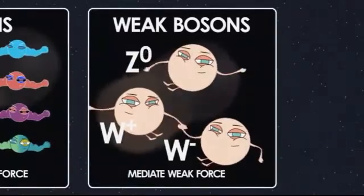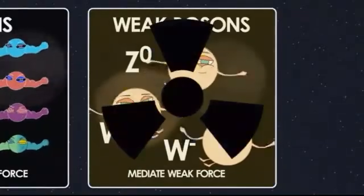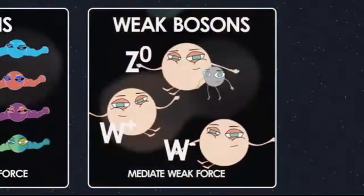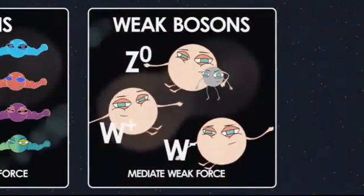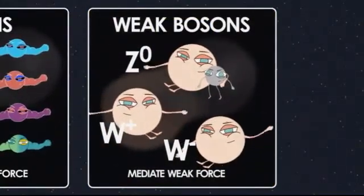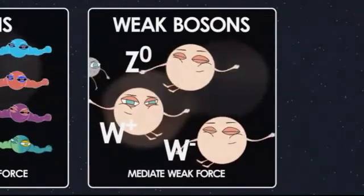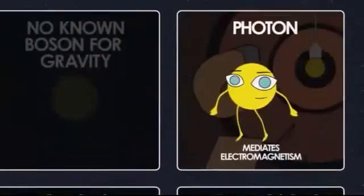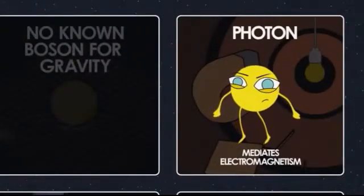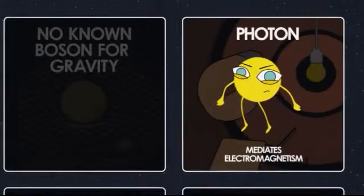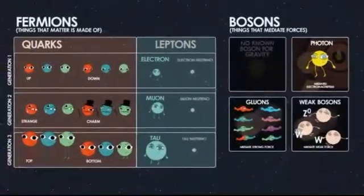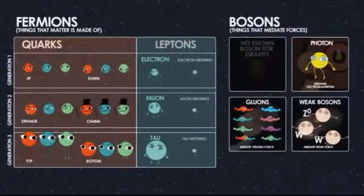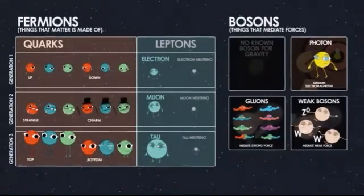The weak nuclear force is basically responsible for certain kinds of particle decay, and it's also the only thing that neutrinos feel, except for very weak gravity. So there are three bosons for the weak force, eight for the strong force, and one for electromagnetism — that's 12 bosons. And then you've got your 18 quarks and the six leptons: the electrons, the neutrinos, and things like that.